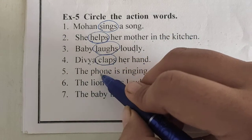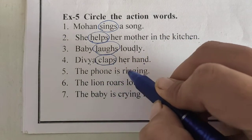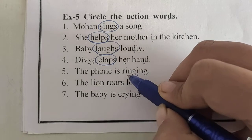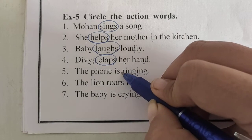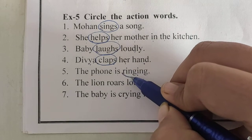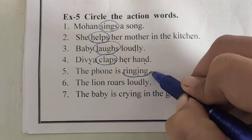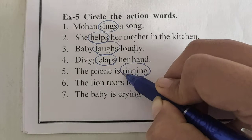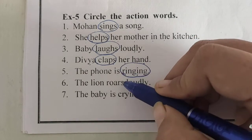Fifth: The phone is ringing. What is the phone doing? The phone is ringing. We have to circle the action word 'ringing'.